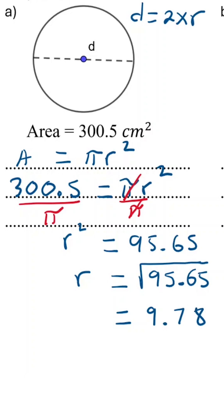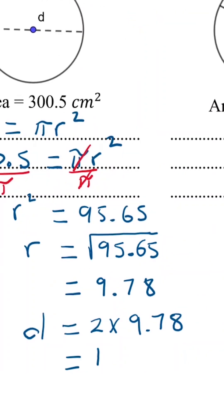So the diameter d equals two times 9.78, which equals 19.56 centimeters.